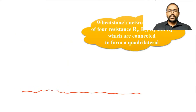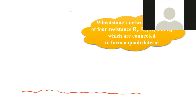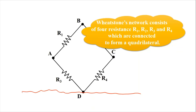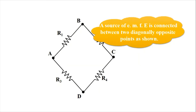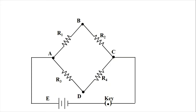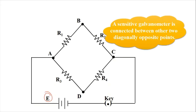Wheatstone's network consists of resistances R1, R2, R3, R4, which are connected to form a quadrilateral. A source of EMF is connected between two diagonally opposite points A and C. Similarly, a galvanometer is connected between the remaining two terminals B and D.